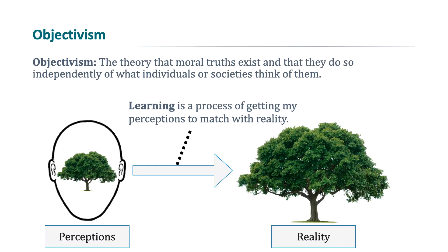Objectivism is the theory that moral truths exist and that they do so independently of what individuals or societies think of them. Because this is an ethics class, we're focusing exclusively on moral truths, but objectivism is actually broader than just a moral theory. You can be an objectivist when it comes to any number of things, such as the existence of a physical reality outside of our sense perceptions.